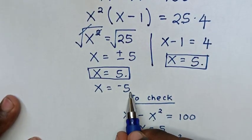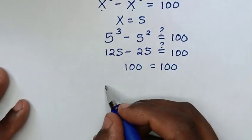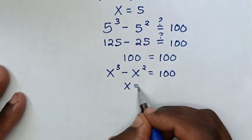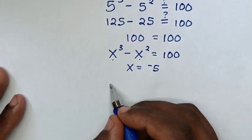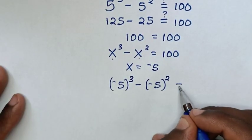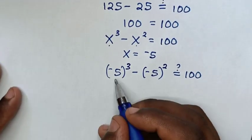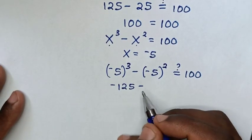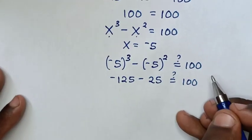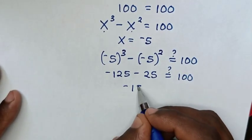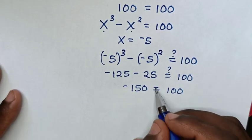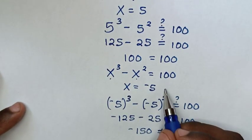Now to check the other solution from x power 3 minus x power 2 equals 100, we substitute x equals negative 5. It becomes negative 5 power 3 minus negative 5 power 2, which gives negative 125 minus 25. Since this is negative but the right side is positive 100, they are not equal, so x equals negative 5 is rejected.